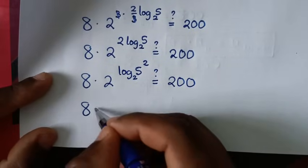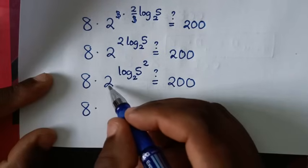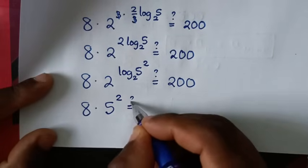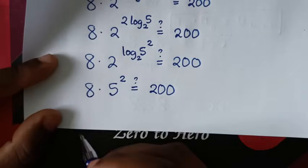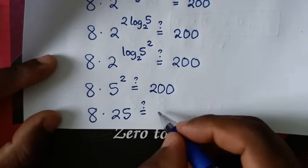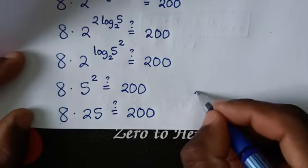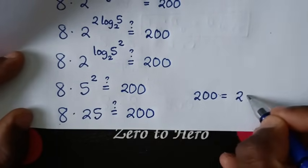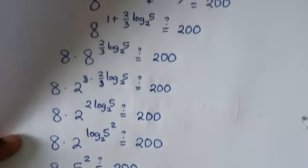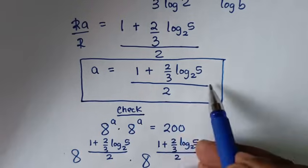From here, since we have base 2, and 2 power of log base 2 of 5 squared equals 5 squared, so here it is 5 squared, which is 25. Then it will be 8 times 25, which is 200, equal to 200. So left side and right side are equal, then it is confirmed true for the value of a, which is a is equal to 1 plus 2 over 3 log base 2 of 5, all over 2.